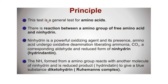The principle of the ninhydrin test: it is a general test for amino acids based on the reaction between the amino group of free amino acids and ninhydrin. Ninhydrin is a powerful oxidizing agent. Amino acids undergo oxidative deamination, liberating ammonia, carbon dioxide, and a corresponding aldehyde and the reduced form of ninhydrin called hydrindantin. The ammonia then reacts with another molecule of ninhydrin and hydrindantin to give a blue-purple substance called diketohydrindylidene-diketohydrindamine, known as Ruhemann's complex.